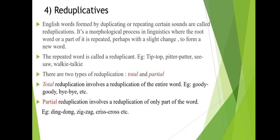The next step is reduplication. English words formed by duplicating or repeating certain sounds are called reduplications. It is a morphological process in linguistics where the root word is repeated, perhaps with a slight change, to form a new word. A part can be repeated, it can be slightly different or identical. The repeated form is called a reduplicate. Examples include: tiptoe, pitty-patter, seesaw, and similar words.